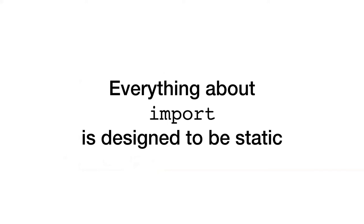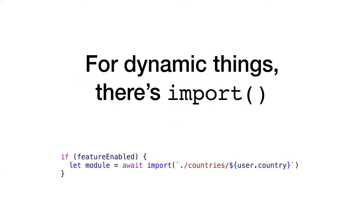Our semantics are not static — this is why I say we don't violate the letter of the law, but we violate the spirit of it. When you want to be dynamic, there is dynamic import — import with parentheses — which is a newer feature. I point this out because I will refer to it later. It is a great feature, but it's different than the static case. It can do all of the things I just described as not allowed with static import: conditional usage, dynamic arguments, in-order execution. All of them work with dynamic import.